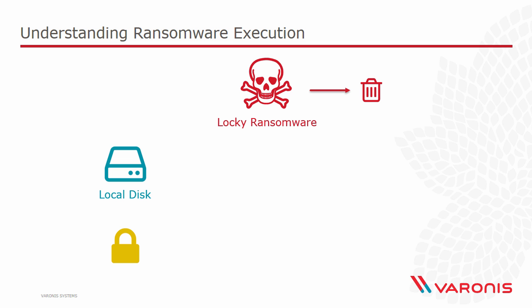Locky doesn't just encrypt the local disk — it also works its way through network storage and encrypts those files as well. Think of what this means in the enterprise. Network storage is where most company sensitive files are, sitting on file shares accessible via desktop machines. That's inevitably how we interact with them, and by the same token that's precisely how ransomware can interact with them. If it can find files on the network and the identity it's executing under has the rights to modify those files, then Locky works through and encrypts them.